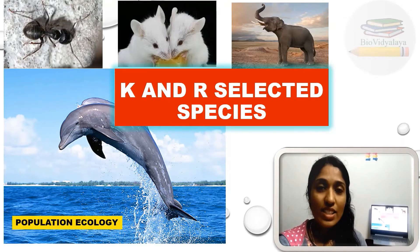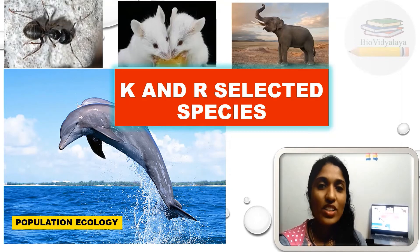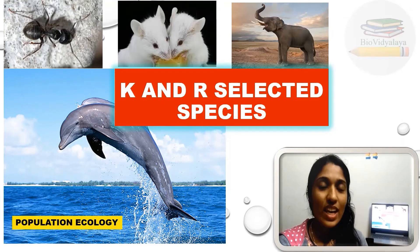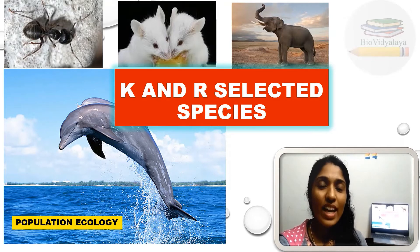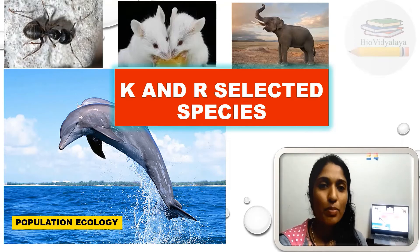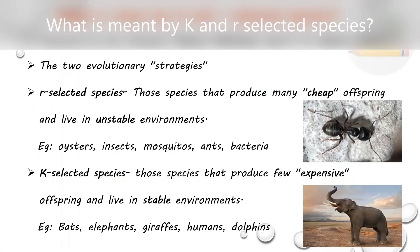K and R strategies are used by ecologists to describe growth and reproductive strategies of various organisms. K means carrying capacity and R means growth rate. The terms K and R selected species were proposed by the biologists Robert MacArthur and E.O. Wilson in 1967. These are two evolutionary strategies.